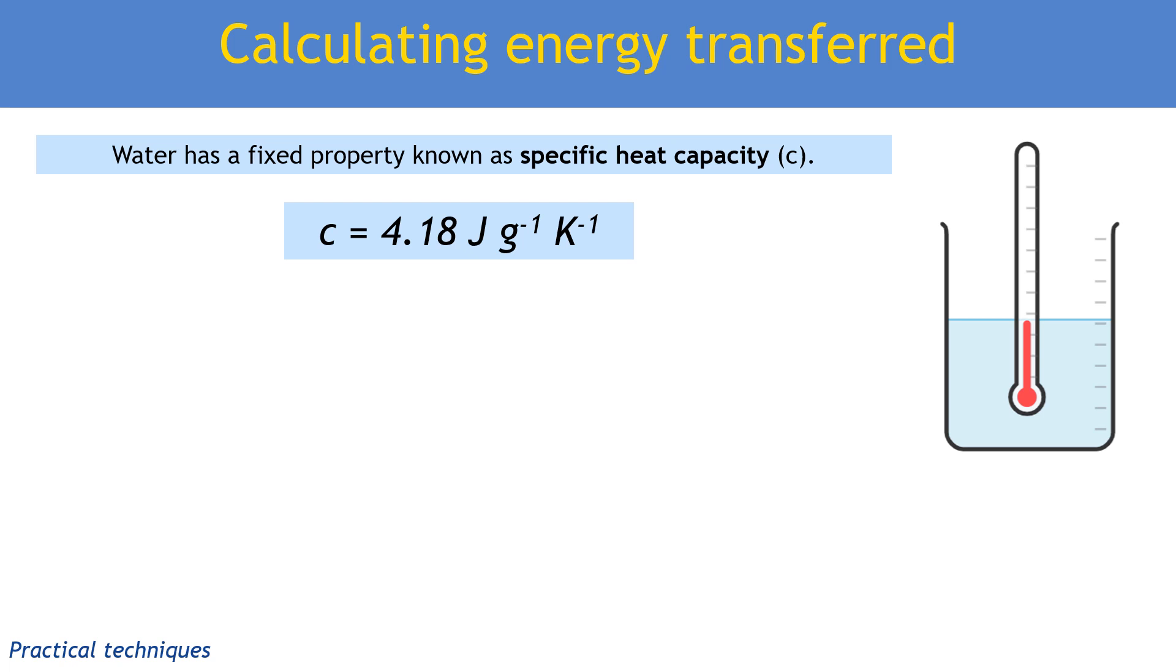Looking at the units for specific heat capacity, 4.18 joules per gram per degree kelvin means it tells you the amount of energy in joules needed to raise the temperature of one gram of water by one degree. Therefore in any experiment to measure delta H, you will need to measure the mass or amount of water that you use and the start and final temperature.